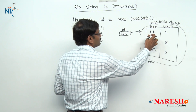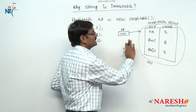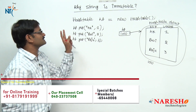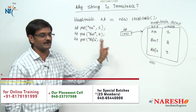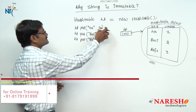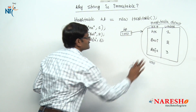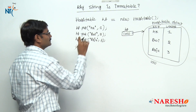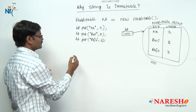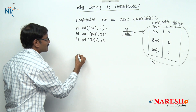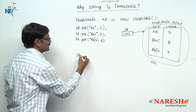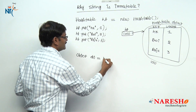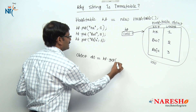Please do not worry about the order of storing — Hashtable internal management I am not following here. Our concentration is only on why string is immutable. Observe that string objects are stored along with integer objects. Now I want to retrieve the data. To retrieve data, I write: Object obj = ht.get("hk").